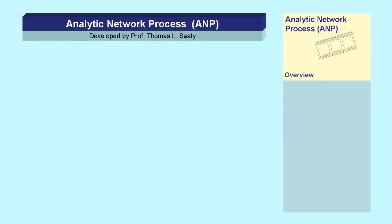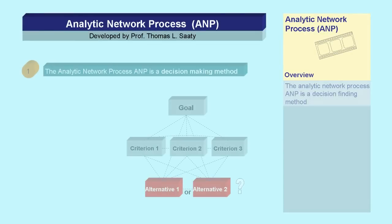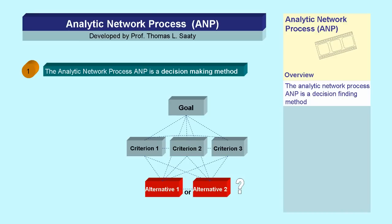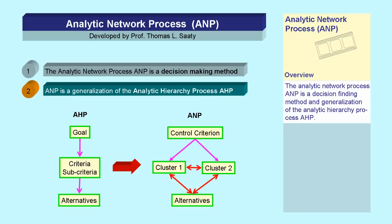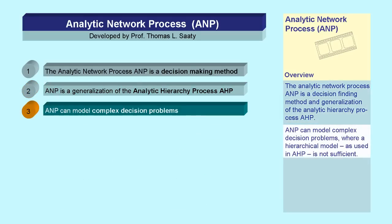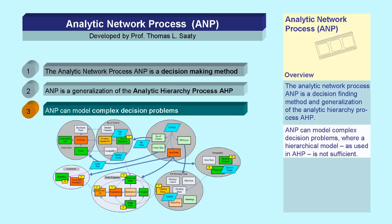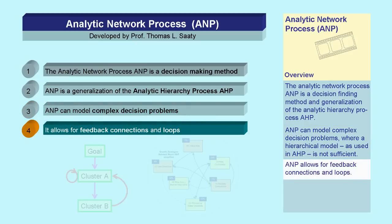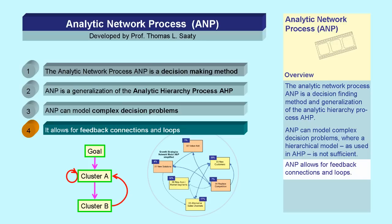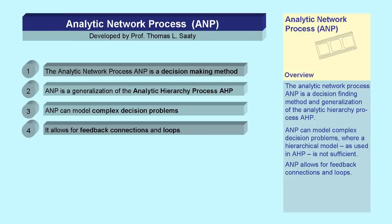The Analytic Network Process (ANP) is a decision-finding method and generalization of the Analytic Hierarchy Process (AHP). ANP can model complex decision problems where a hierarchical model, as used in AHP, is not sufficient. ANP allows for feedback connections and loops. The Analytic Hierarchy Process is incorporated in the Analytic Network Process.